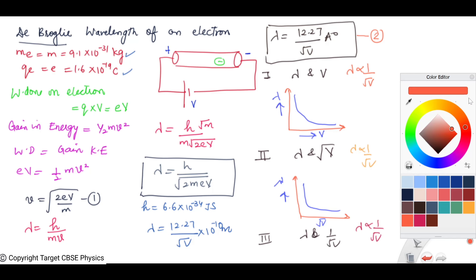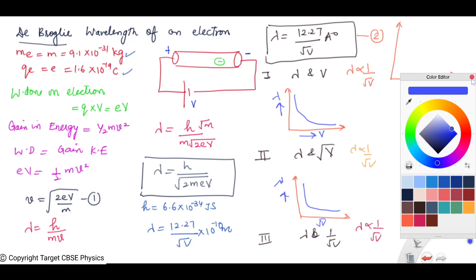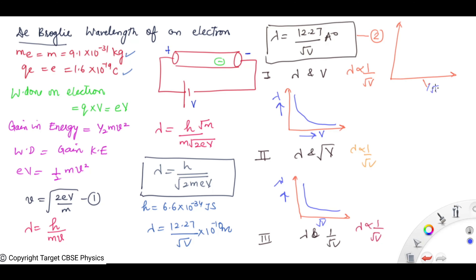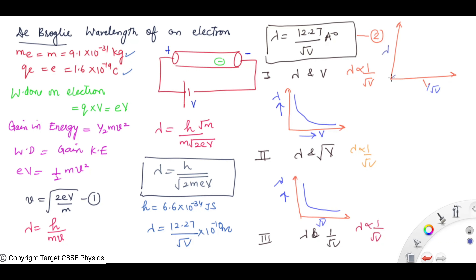From equation 2, λ is directly proportional to 1/√V. For a direct proportion, the graph will be a straight line. We plot 1/√V along the x-axis and λ along the y-axis. Since λ and 1/√V are directly proportional, the graph is a straight line.